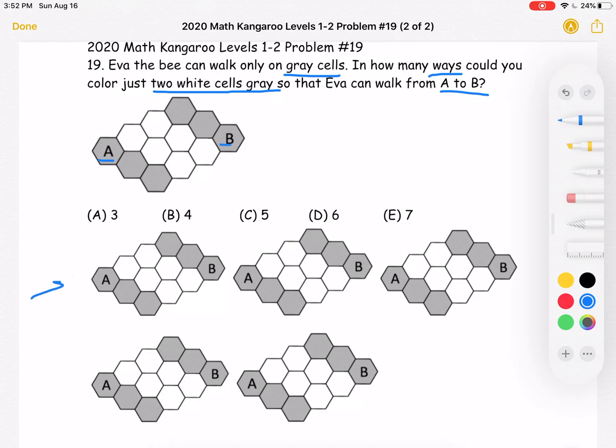Let's start doing our work over here. I'm going to label this cell as 1, this one as 2, and this one as 3. Let's start with Eva going from A to cell 3, and then to B. We can do it like that because we can only be going through two white squares, which we're going to color gray.